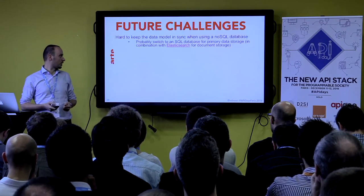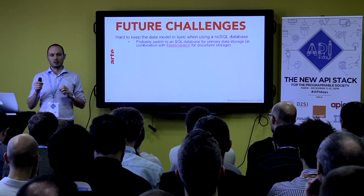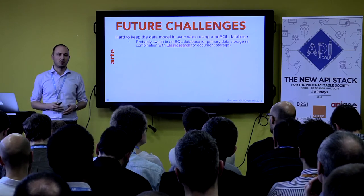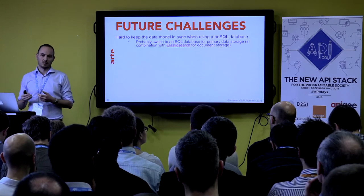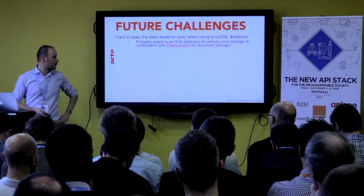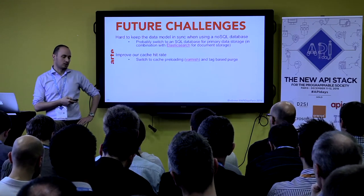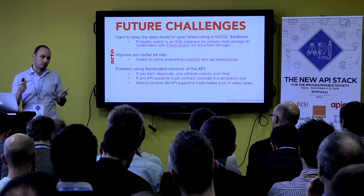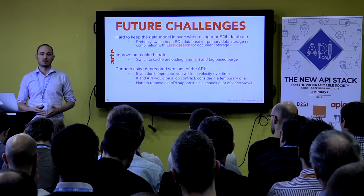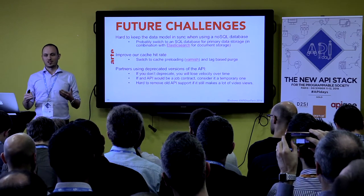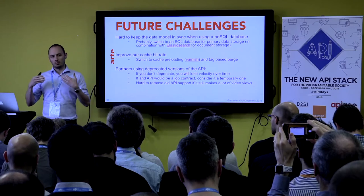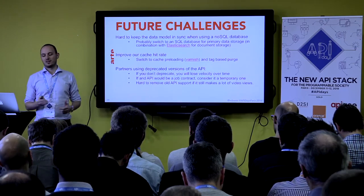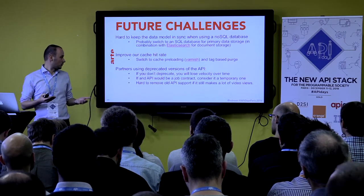We have some huge challenges. As we're using a NoSQL database, it's very hard to keep the data in sync — when we have relationships between different objects, it's hard to keep them in sync. In our future releases, we'll probably try and switch our main database to a SQL database. We'll try to improve our caching strategy by basing ourselves on cache preloading. One of our main struggles is that we have old versions of these APIs, and it's so hard to deprecate them because those APIs are still making video views and still publishing our content. When we keep old APIs, we're just losing velocity.